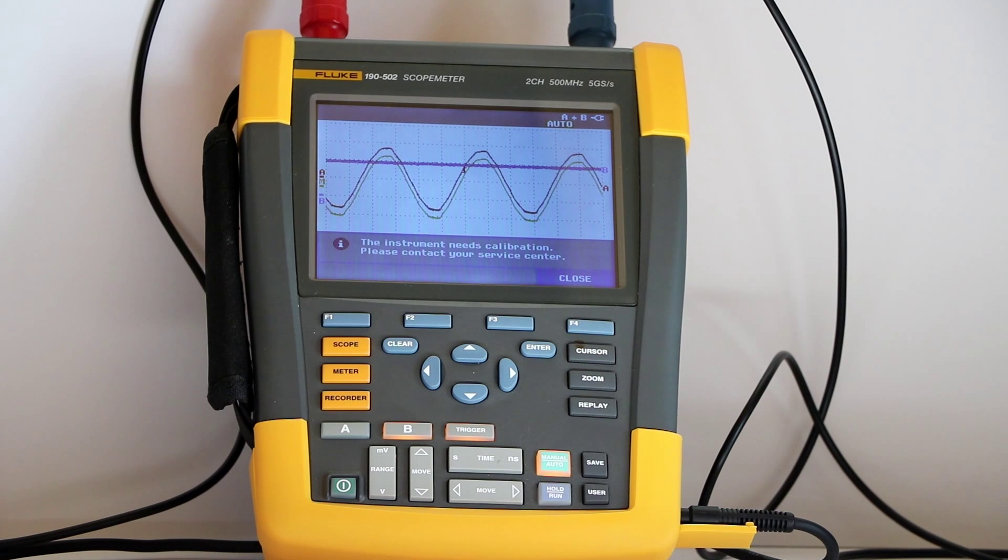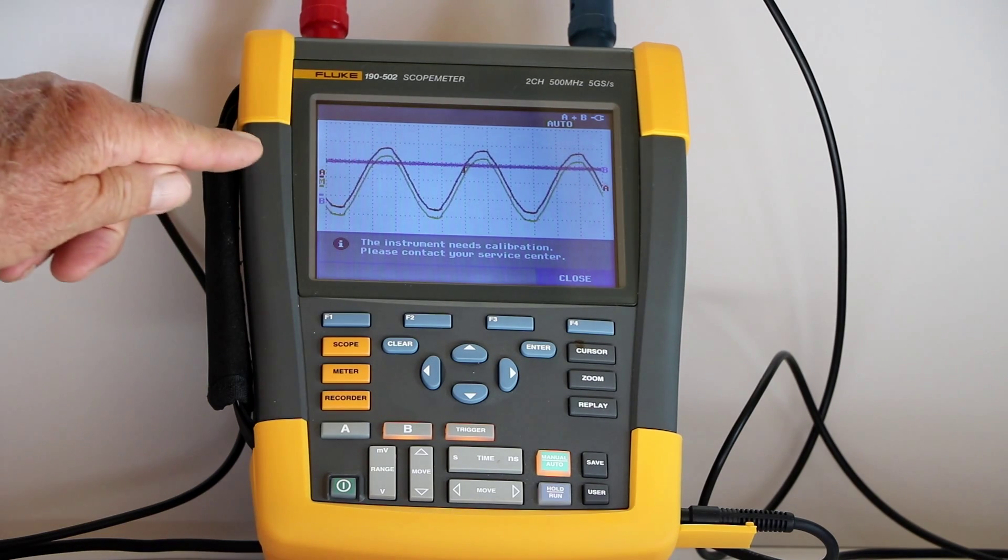For this demonstration, we have connected channel A to a 60 hertz sine wave provided by the utility supply via a premises branch circuit. Additionally, we have connected channel B to a 9-volt transistor radio battery providing a DC voltage represented by a flat horizontal line situated slightly less than two divisions above the x-axis.